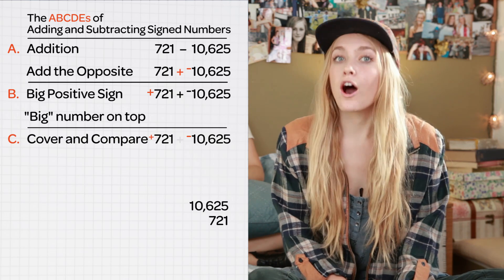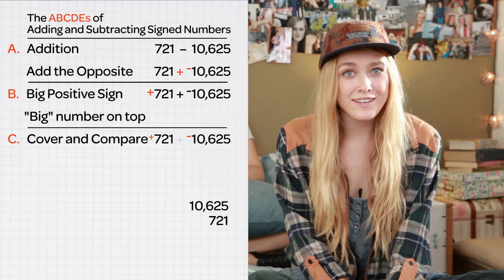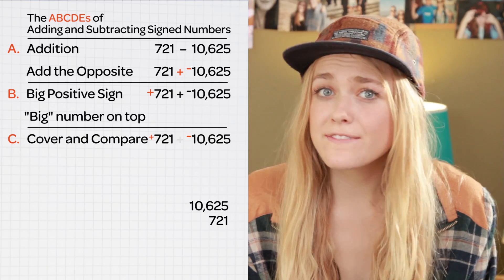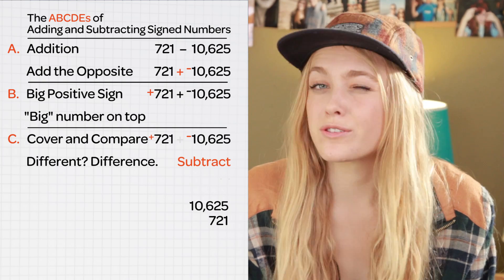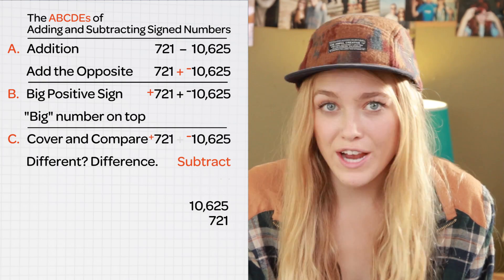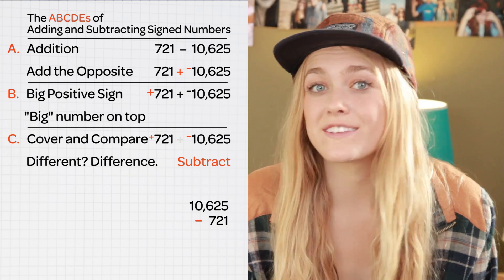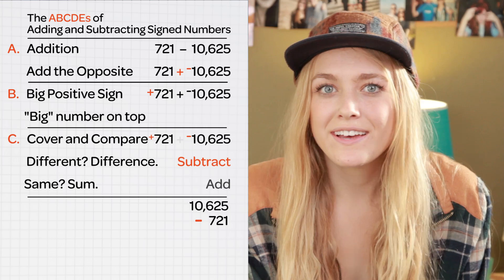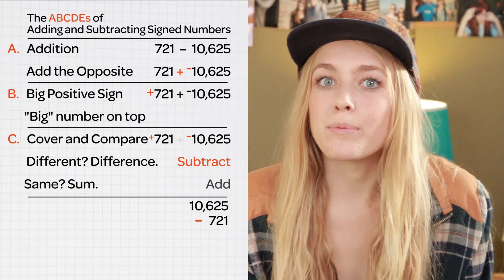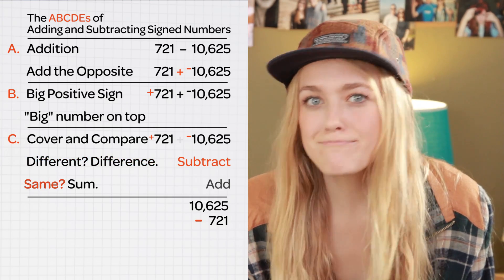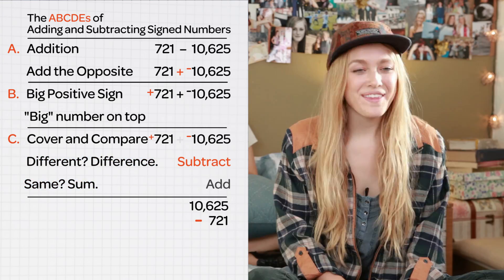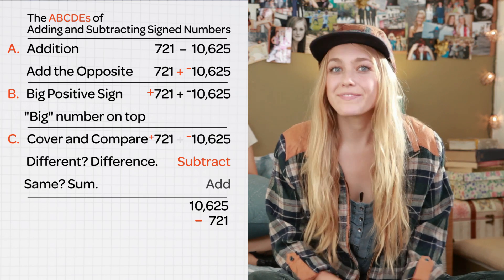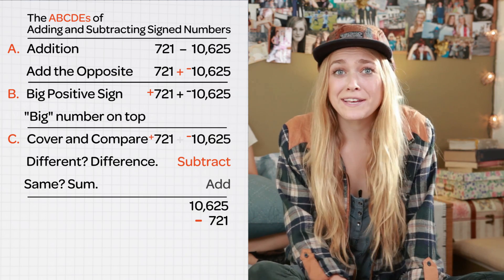C — Cover the operations and compare the signs of the two numbers. If the signs of the two numbers are different, we set up the scratch work as subtraction. But if the signs of the two numbers are the same, we set up the scratch work for addition. Try to remember: different = difference, same = sum. Okay, we're good with our signs for now. Let's set them aside for later and move on to the next letter.